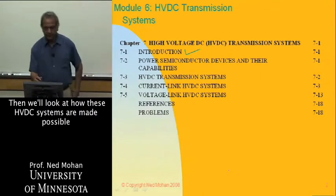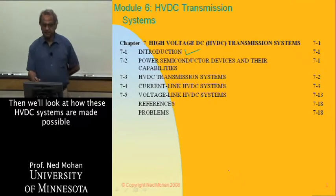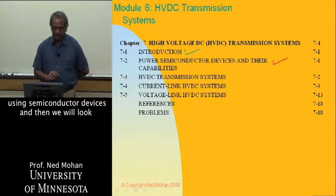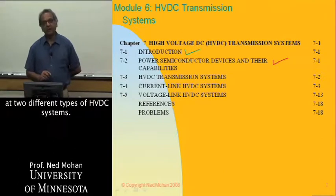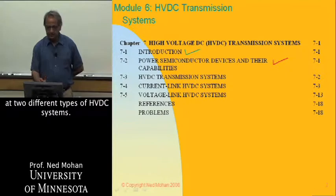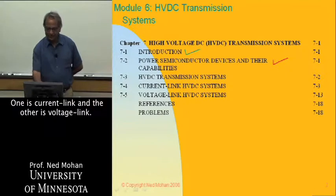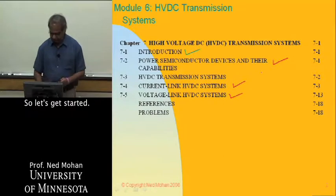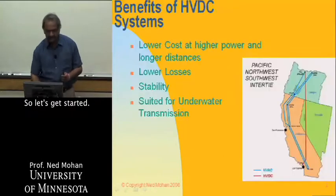Then we'll look at how these HVDC systems are made possible using semiconductor devices, and then we'll look at two different types of HVDC systems: one is current link, and the other one is voltage link. So let's get started.